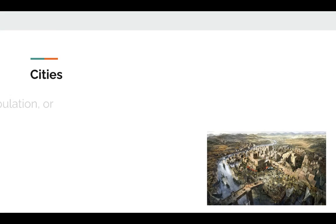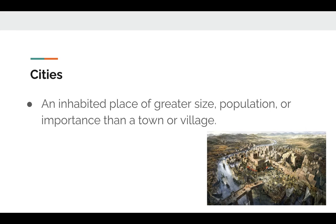Our next characteristic is cities — an inhabited place of greater size, population, or importance than a town or village. Do we have cities in our civilization? Yes, we do. Albany, New York, the capital of New York, is a city. Schenectady is a city. Troy is a city. So, yes, we've got cities.